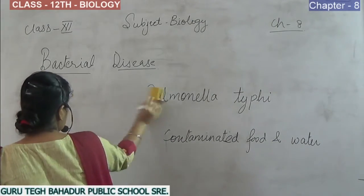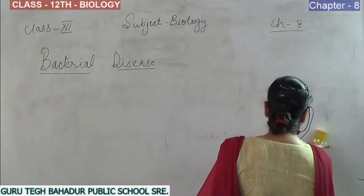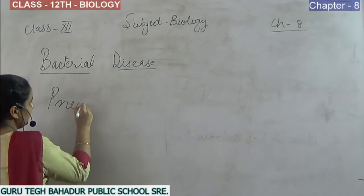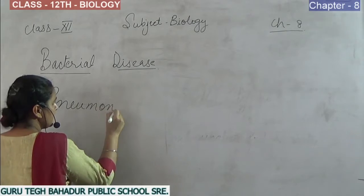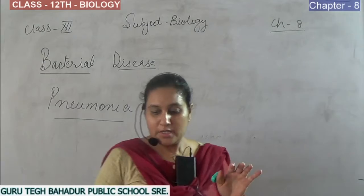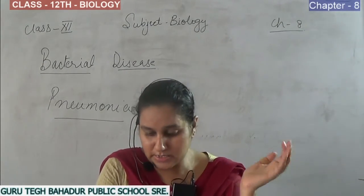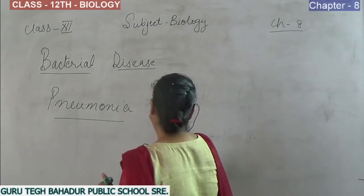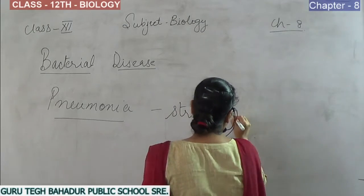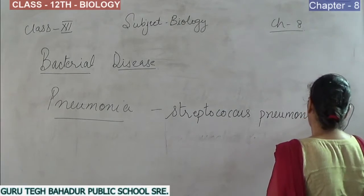The next bacterial disease is pneumonia — a name you have commonly heard. Pneumonia is a bacterial disease very commonly observed in small infants. It is caused by the bacteria Streptococcus pneumoniae.